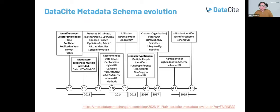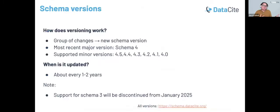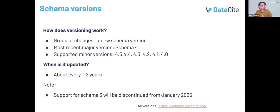As I mentioned, DataCite releases new schema versions, both major and minor, approximately every one to two years. The difference is that major versions introduce breaking changes — such as schema 4, for example, which was introduced back in 2016.